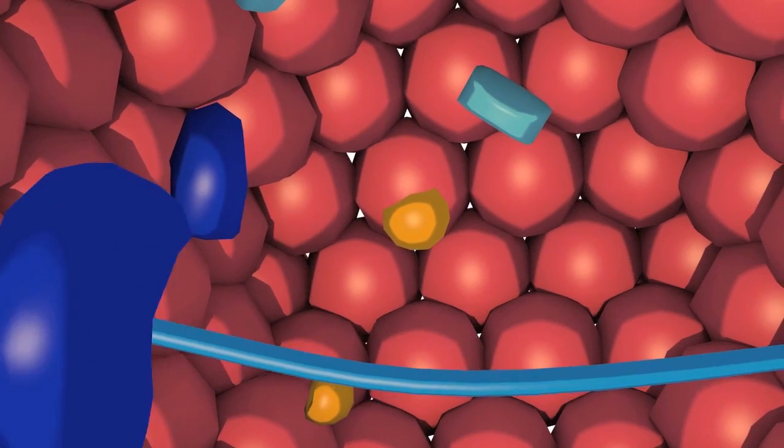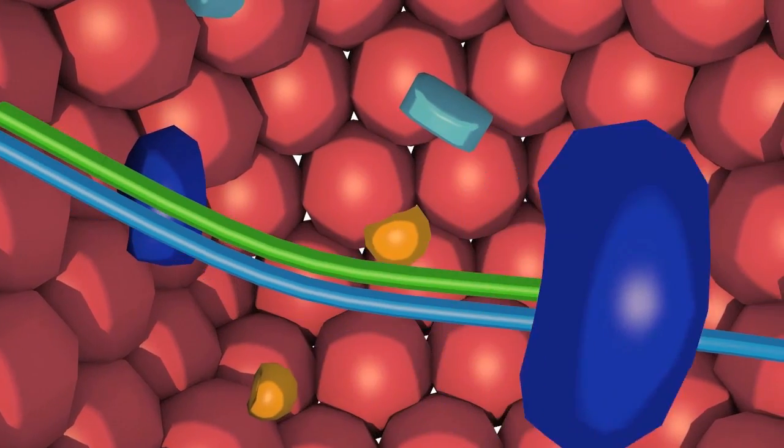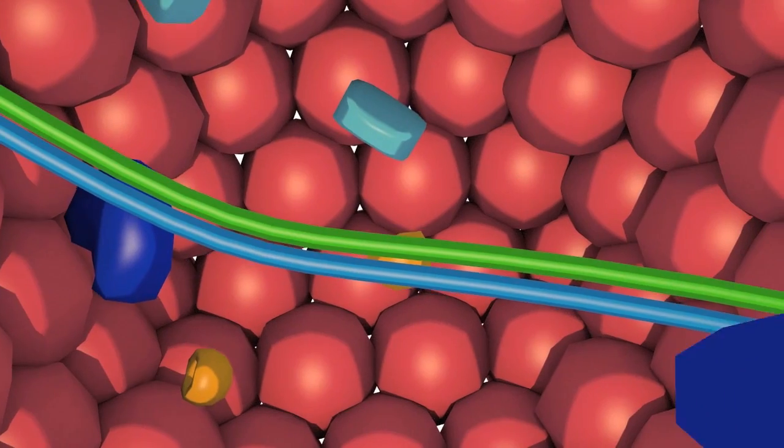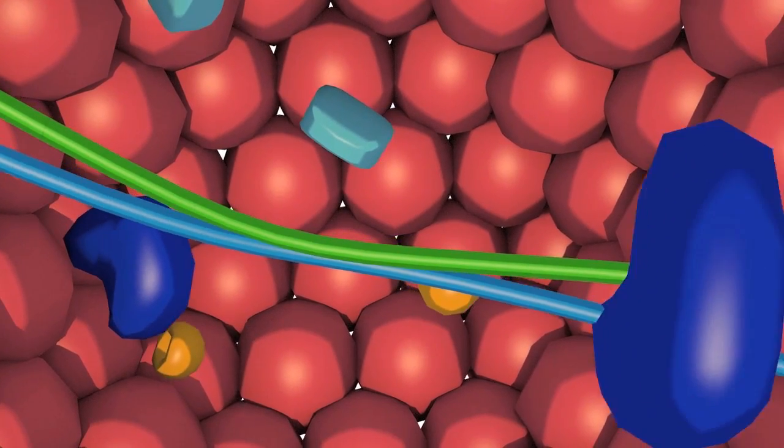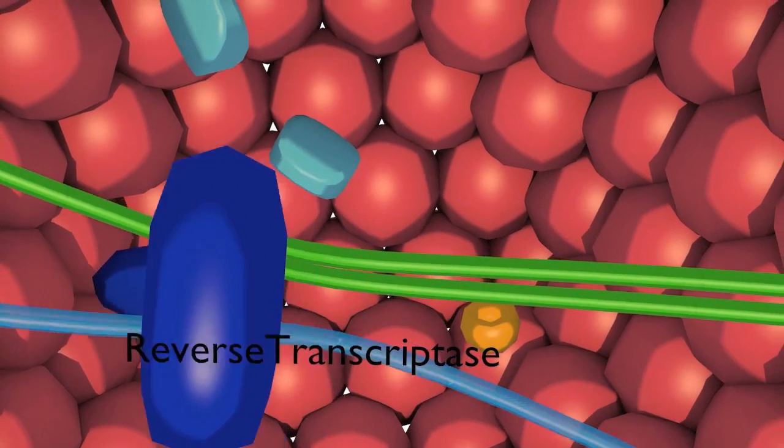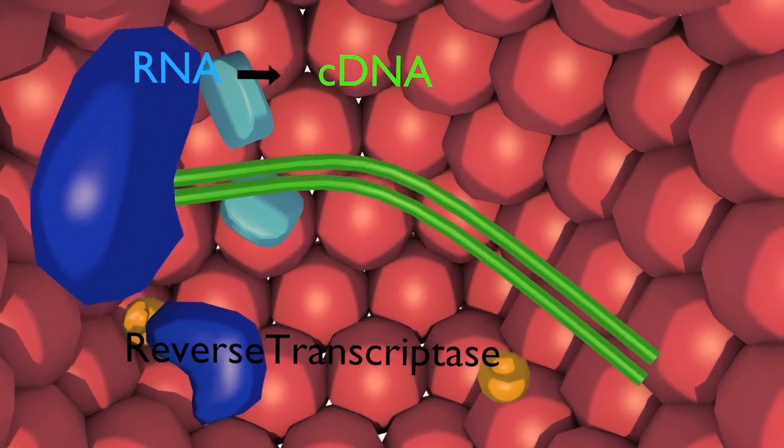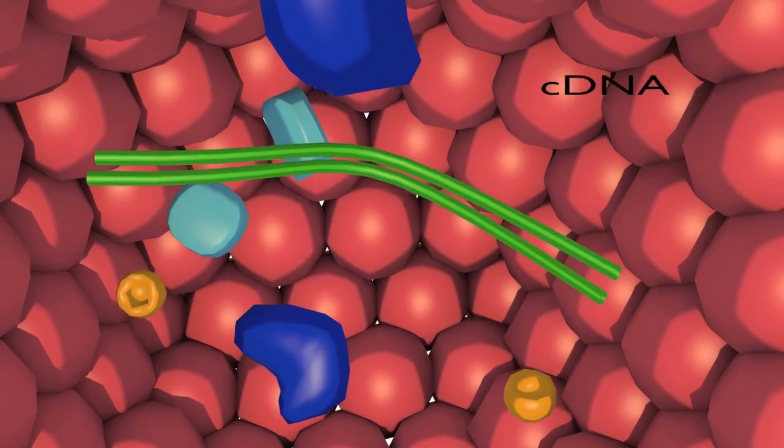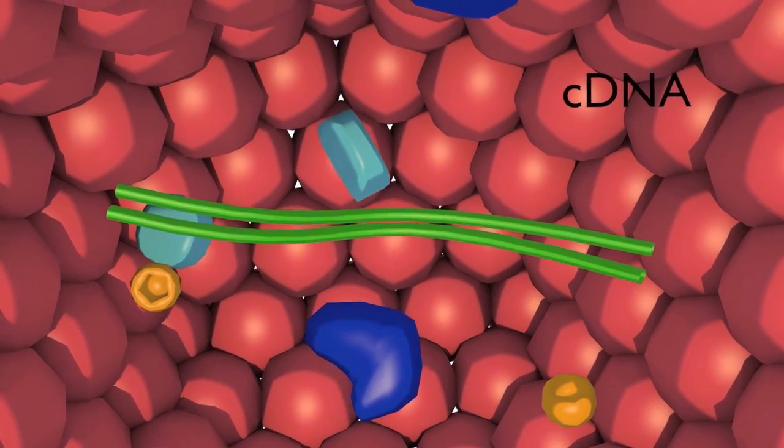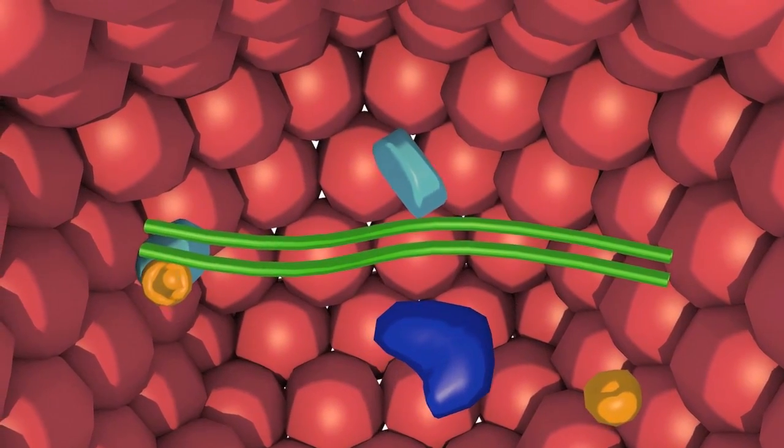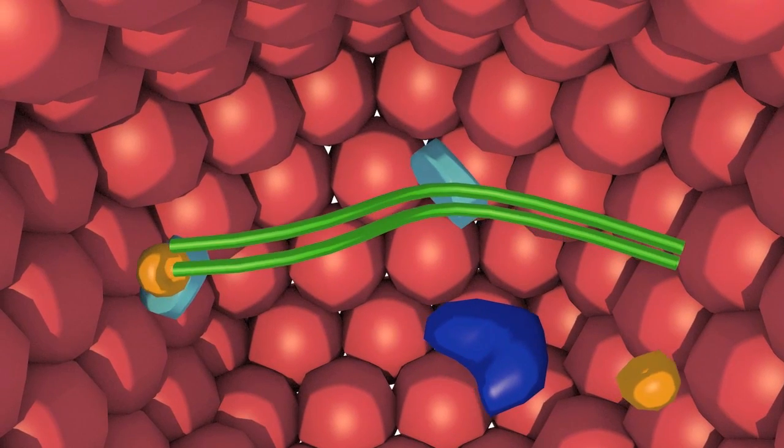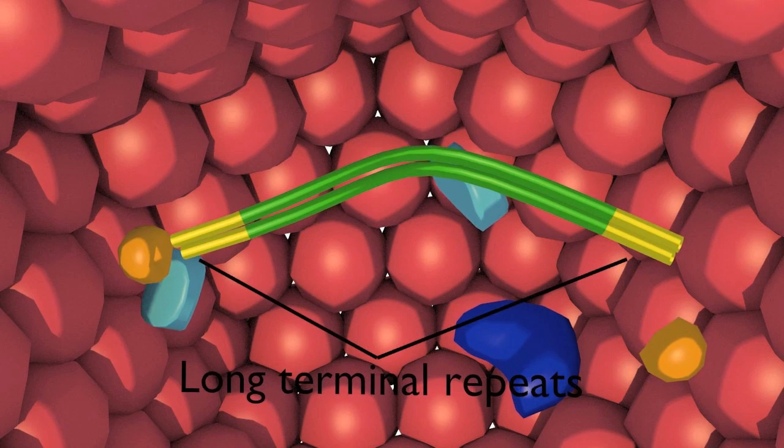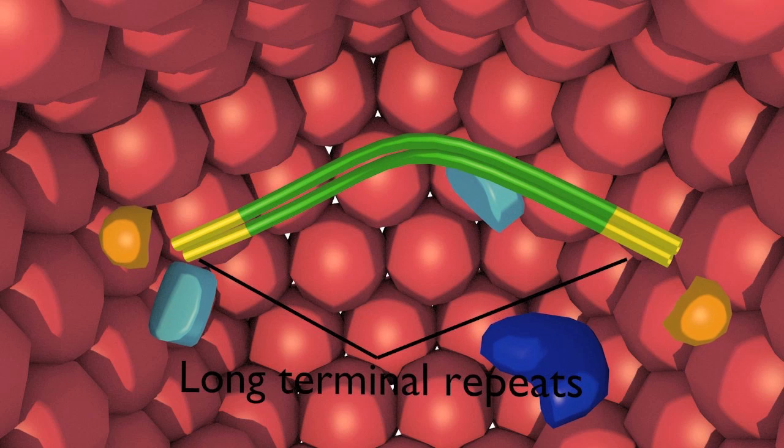Once inside the host cell, the viral RNA genome is converted into a double-stranded DNA genome by the virally encoded reverse transcriptase, an RNA-dependent DNA polymerase. This viral DNA genome is also called a cDNA. The termini of the viral DNA genome are directly oriented repeat sequences called long terminal repeats, which are several hundred base pairs long.